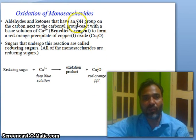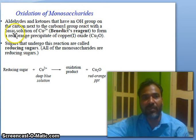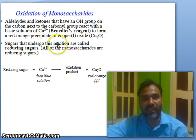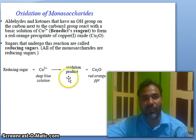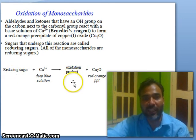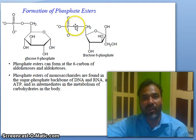Oxidation of monosaccharides: aldehydes and ketones that have an OH group on the carbon next to the carbonyl group react with a basic solution of copper(II) to form a red-orange precipitate of copper(I) oxide. The sugars that undergo this reaction are called reducing sugars. All monosaccharides are reducing sugars. The deep blue solution converts to red, and the reducing sugar is converted to an oxidation product.